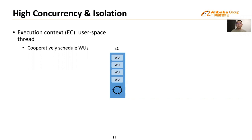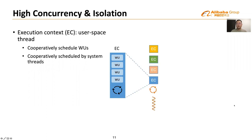Existing OLAP and HTAP systems generally use a process- or thread-based concurrency model and rely on the operating system to schedule concurrent queries. The expensive context switching cost puts a hard limit on system concurrency. To solve this, Hologres provides a user-space thread called an execution context to abstract the system thread. Work units are mapped to execution contexts and cooperatively scheduled by the execution contexts they belong to. Execution contexts are cooperatively scheduled by system threads with little context switching overhead, laying the foundation for high-concurrency query execution. A host scheduler balances execution contexts across system threads.